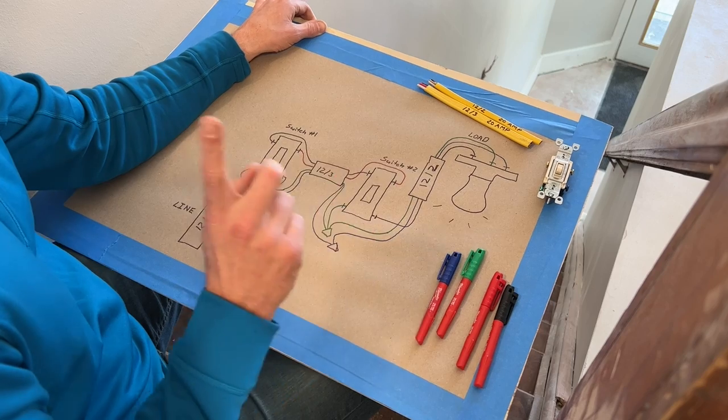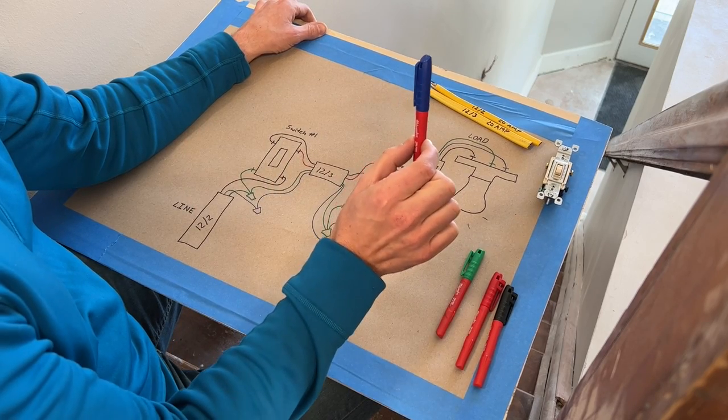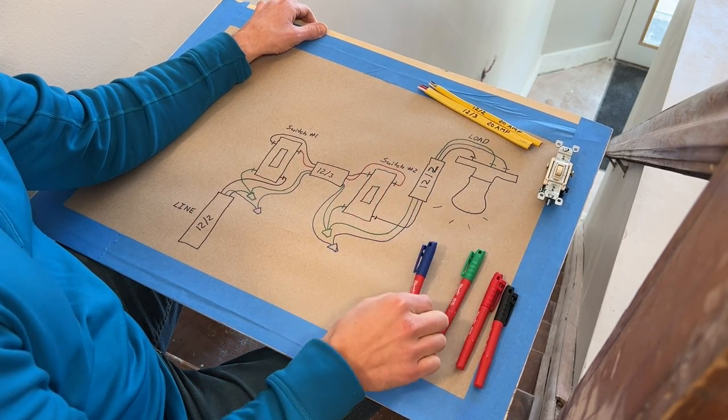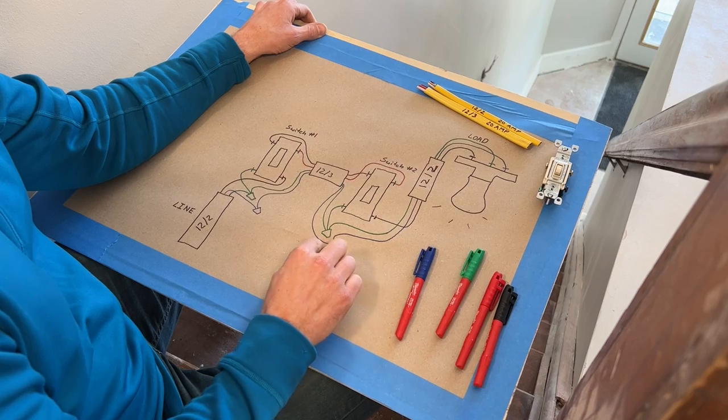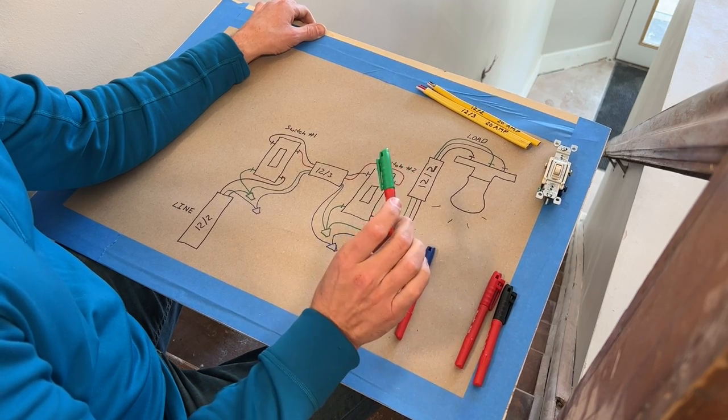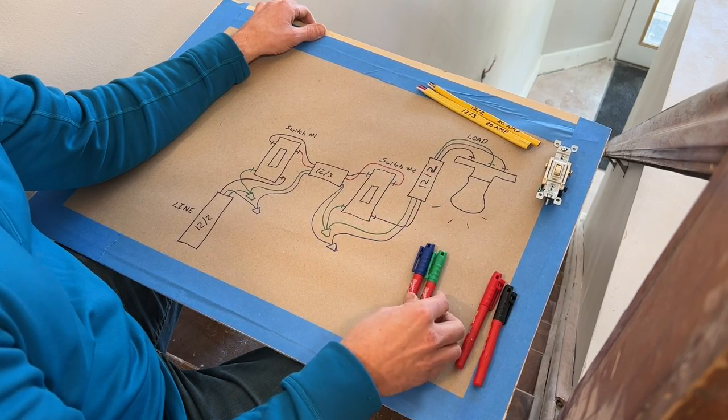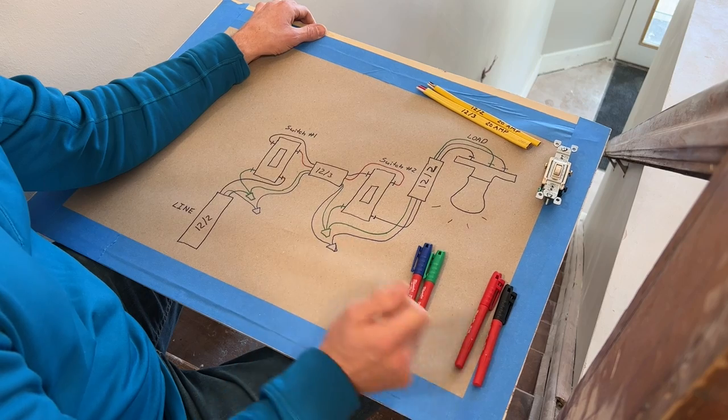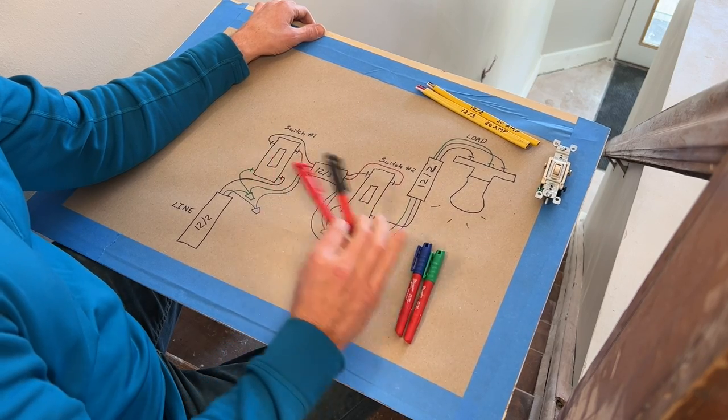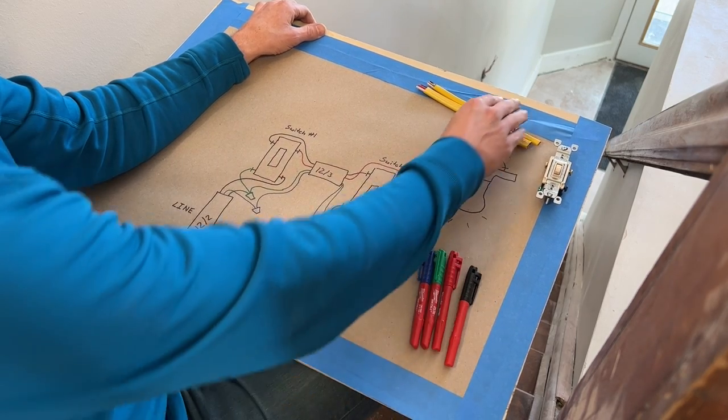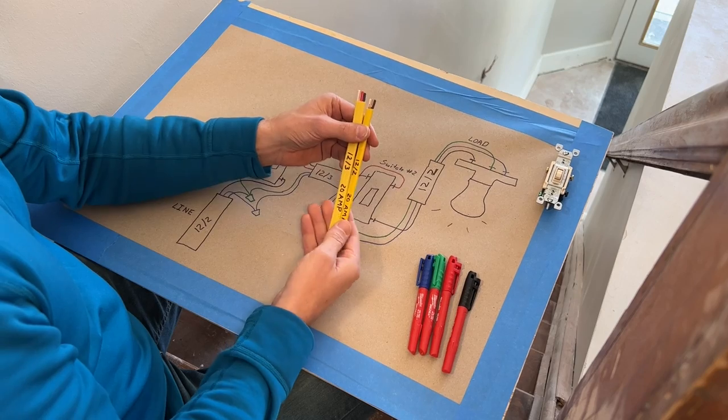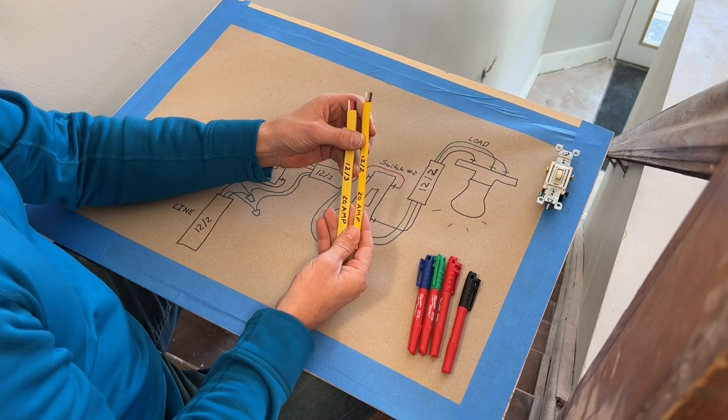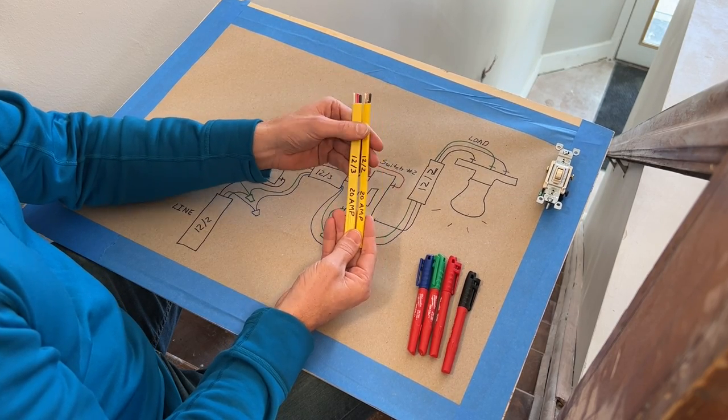A few callouts here that might be confusing. The most confusing is blue actually would indicate a white wire, which is neutral. Green is ground - that's a little bit more self-explanatory, even though it'd be a bare copper wire. And then black and red are true to what you should see if you're using standard Romex, like a 12-2 Romex here and a 12-3 Romex.